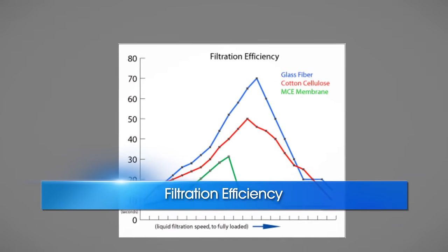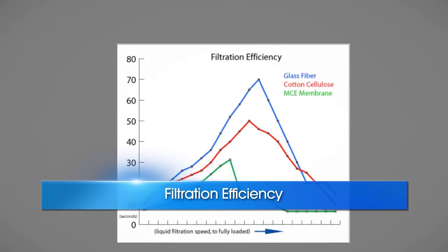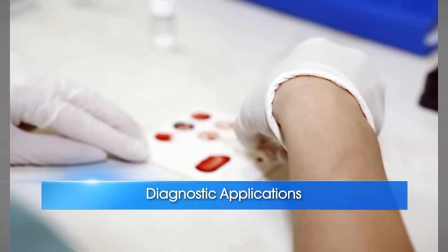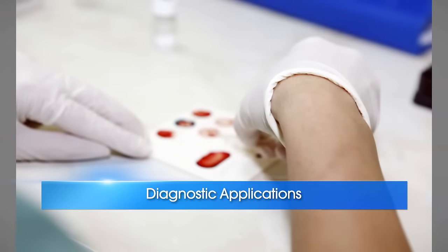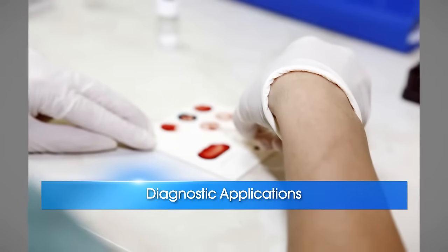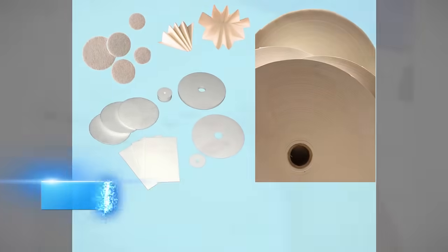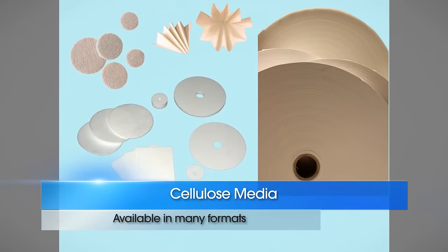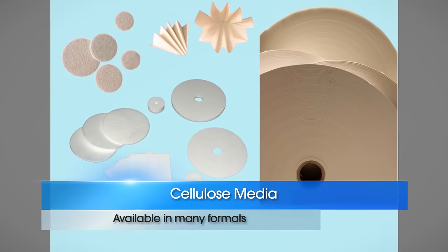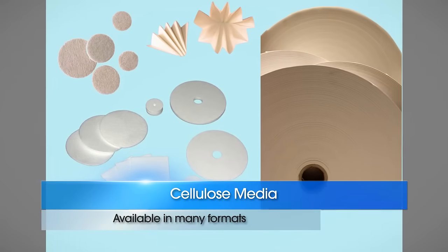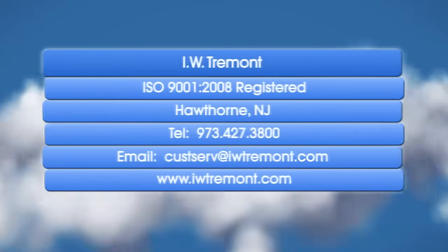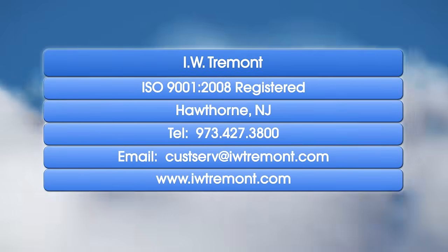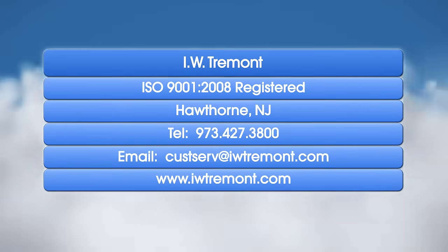Cellulose media are available in a wide range of application-relevant characteristics and properties. These include basis weight, thickness, surface hardness, ash content, as well as many others. Cellulose media are available in all usual formats, shapes, and sizes. Your local authorized distributor can provide additional product details, or simply visit our website at IWTremont.com.